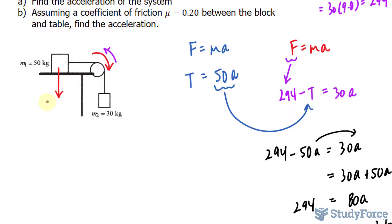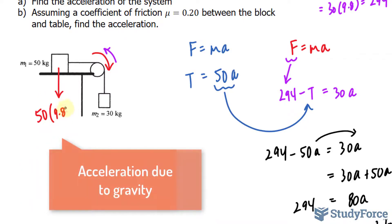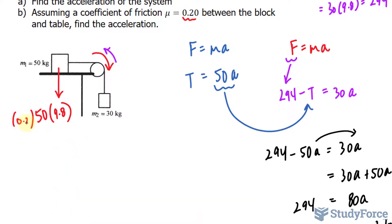And the way we do that is again we use F equals mA, Newton's second law, and we write down 50 times 9.8 times this number, that factor, 0.20. So multiplying these out.